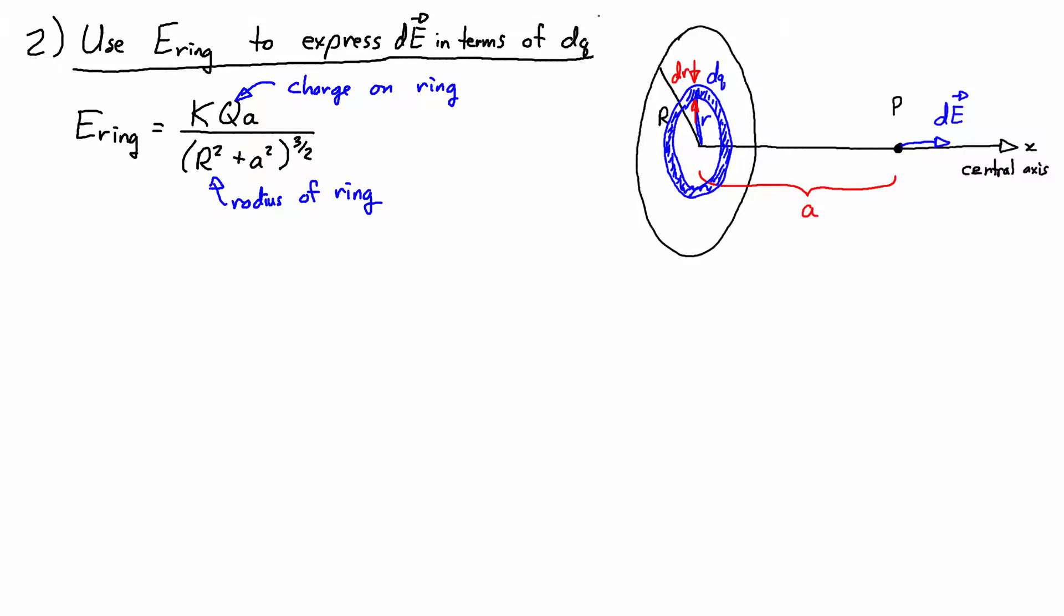This is nice because it means there are no off-axis components. No matter what size of ring we have, the electric field, like every single dE from every single ring is going to point along x. And so that means that the math is a bit easier.